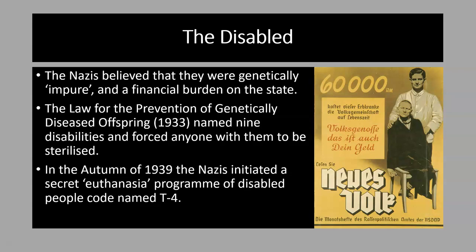The persecution got even worse in autumn 1939 with the T4 programme, which focused on disabled people living in state-run nursing homes or hospitals. A survey was given to doctors and nurses about individual patients — told it was to collect government statistics — but the real purpose was to identify victims. Once identified, victims were transported on buses to one of six killing centres. Initially they were killed by lethal injection, but by 1940 this was changed to gassing by carbon monoxide, which was seen as cheaper and more effective — a method later replicated with the Jews. Victims were cremated and their families told they died of natural causes.